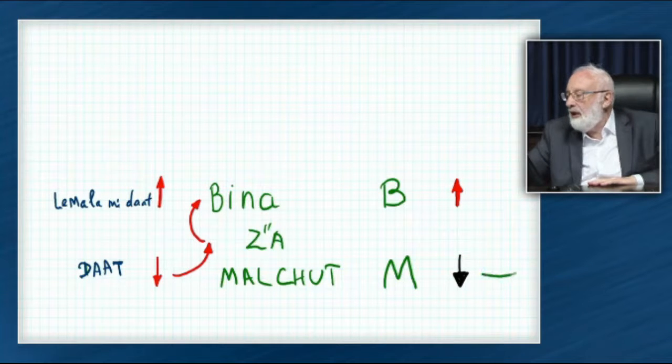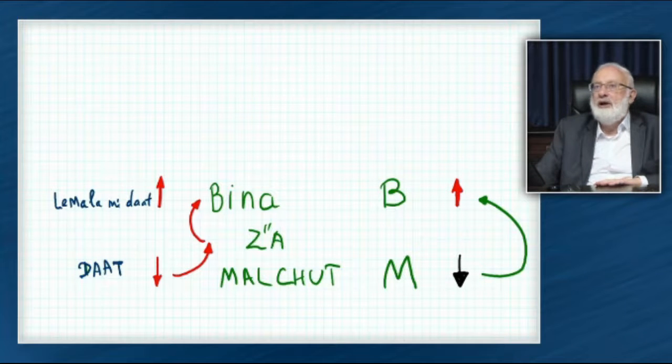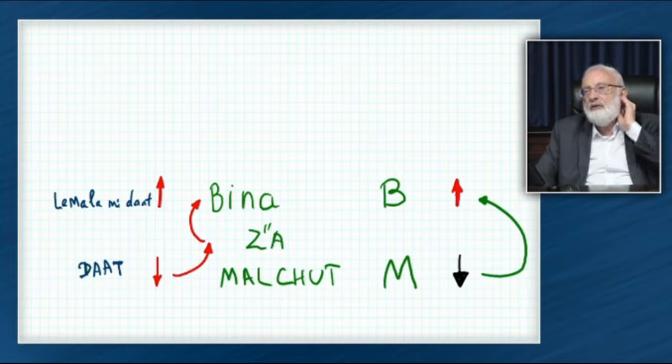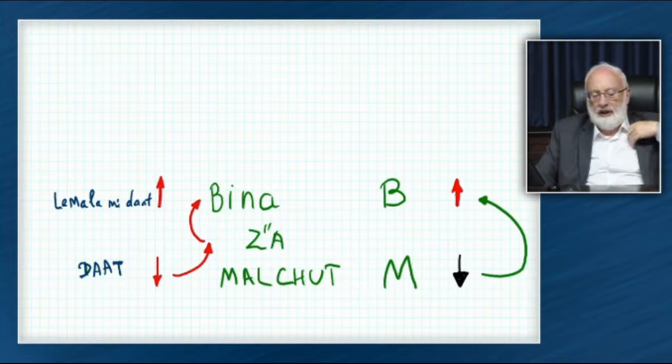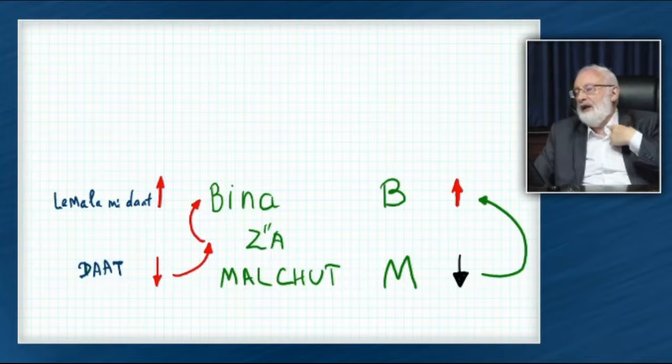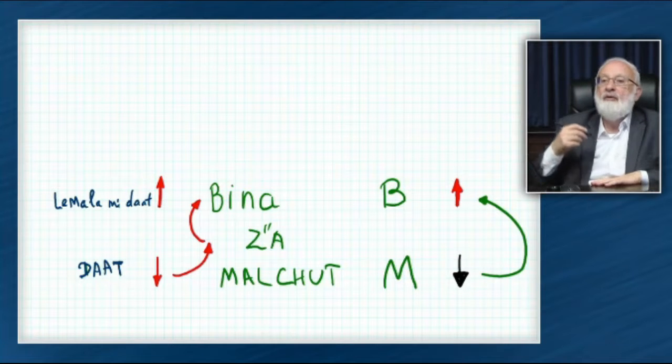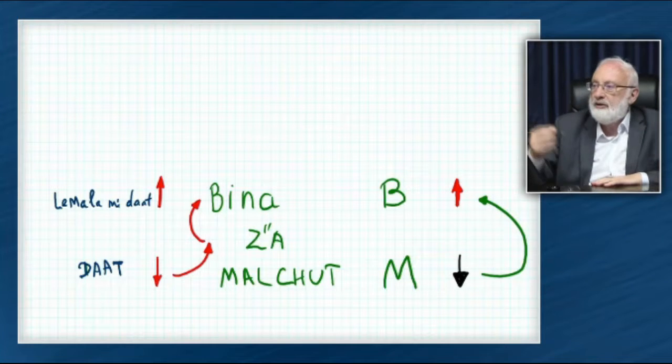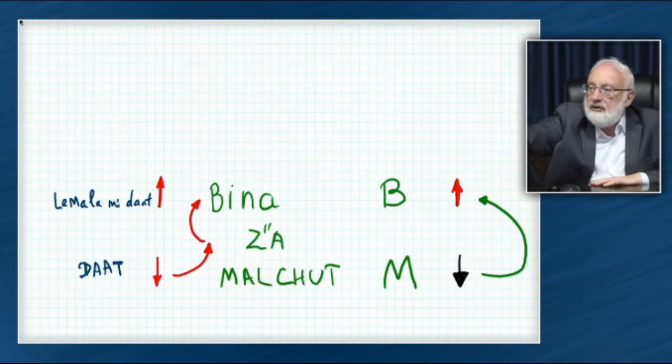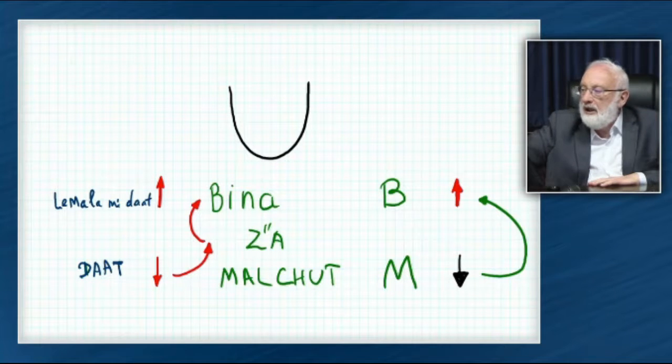We have to raise our desire from malchut to bina, from the will to receive to the will to bestow. We can't change the desire for it to become the desire to bestow. We do it by our will to receive working like the will to bestow. Meaning what? That our will to receive...